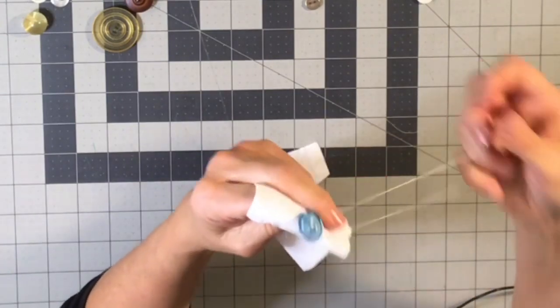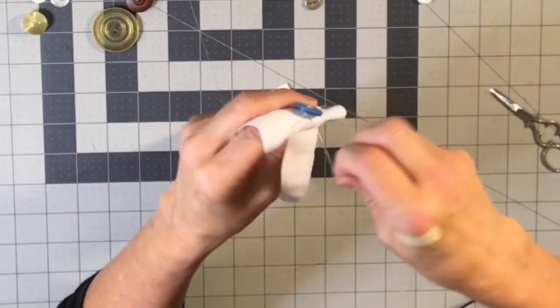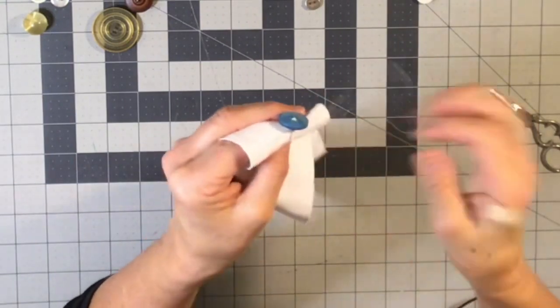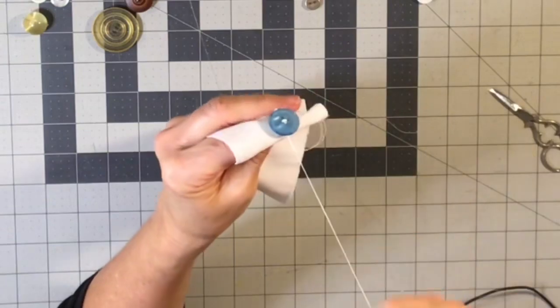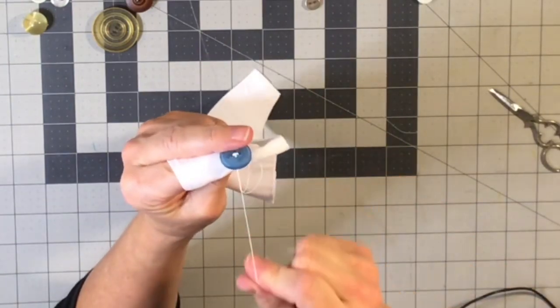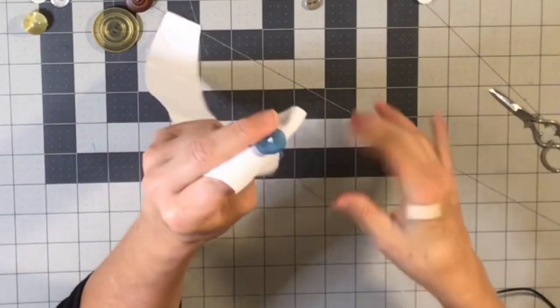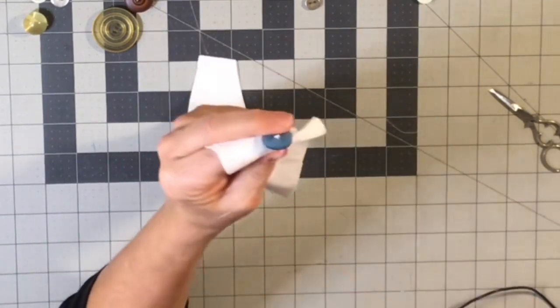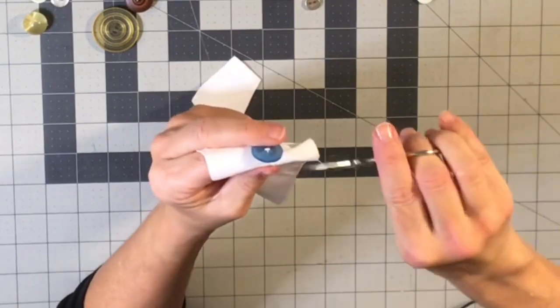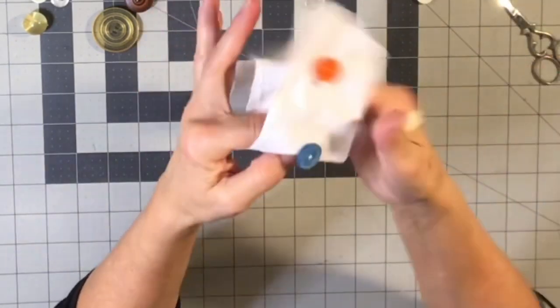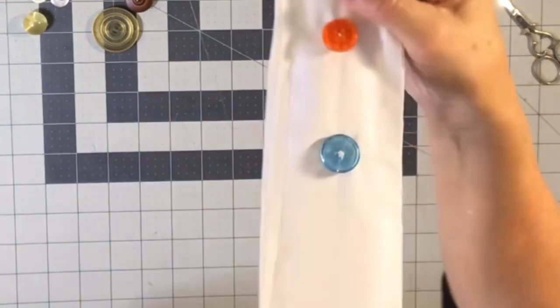We're going to take the thread coming out of the fabric, wrap it a couple times around that needle, pull the needle up, making sure these threads are aligned, there's not going to be any loops. Pull it a little snug there and then clip it off. And that's how you do a four-hole button.